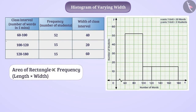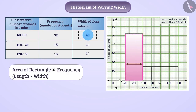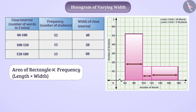In a histogram, the area of rectangles must be proportional to frequency. The width of each rectangle depends on the class width, and the class widths here are different, so the widths of the rectangles also vary. If we want the areas to be proportional to frequency, we must change the length of the rectangles. Since the class width of each class interval is fixed, we cannot change the width — so we have to change the length. Can you tell us how we will make this change? Think.